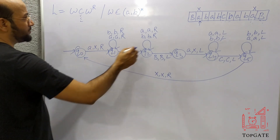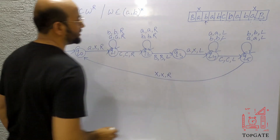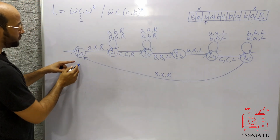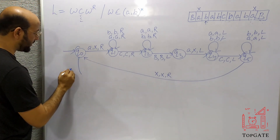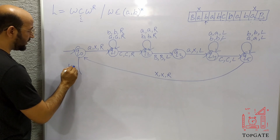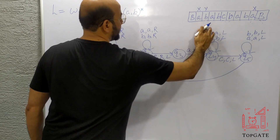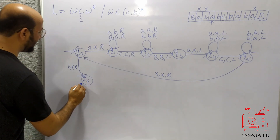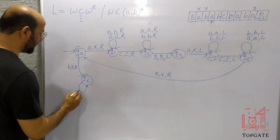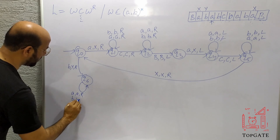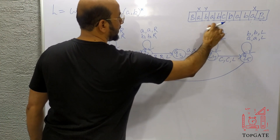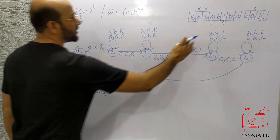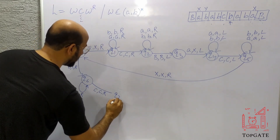Now the pointer moves to the next element, which is B. This time we take a move for B: change B to Y and go right, moving to state Q6. At Q6, take a self-loop: A, A, R and B, B, R — all A's and B's are skipped. The pointer reaches C. If you find C, let it be C and go right. This C is skipped and the pointer moves to the next element, going to state Q7.